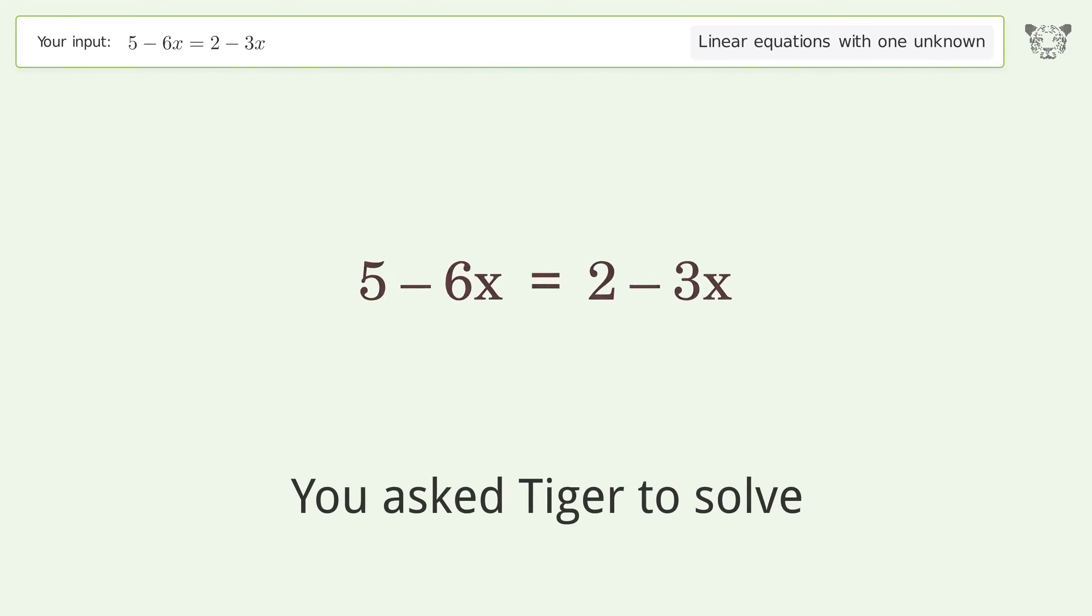Let's solve this linear equation with one unknown. The equation is 5 - 6x = 2 - 3x, and the final result is x equals 1.